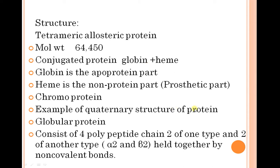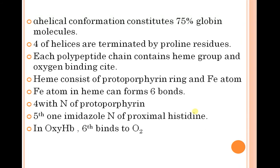Globin is the apoprotein, and heme is the non-protein prosthetic part. It is a chromoprotein and an example of quaternary structure of globular proteins. It consists of four polypeptide chains: 2-alpha and 2-beta, held together by non-covalent bonds. It has an alpha-helical structure conforming to 75% of the globin molecule. Four of the helices are terminated by proline residues.